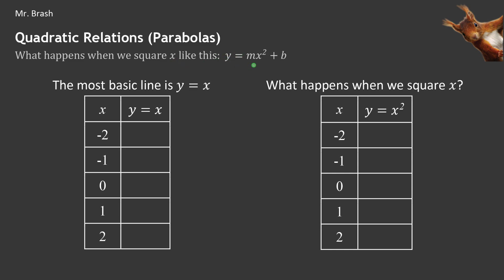So if I had my equation of a line, y equals mx plus b, if I square the x here, what's going to happen to our graph? We already know that the most basic line we could possibly have is a slope of 1 and a y-intercept of 0, so y equals x. If we had a table of values for y equals x, the y values match the x values, just like this.